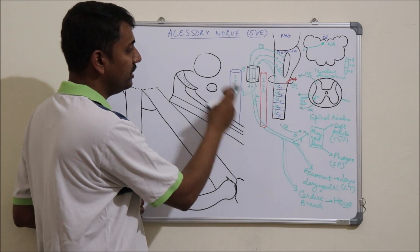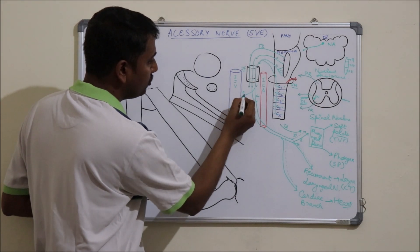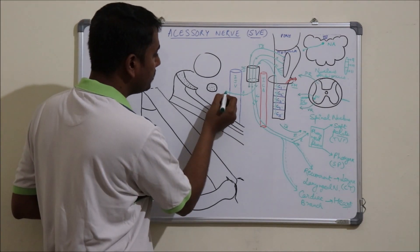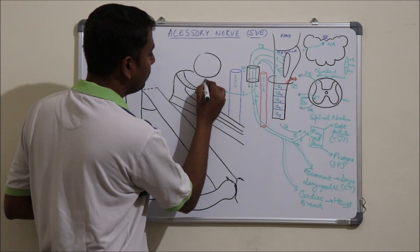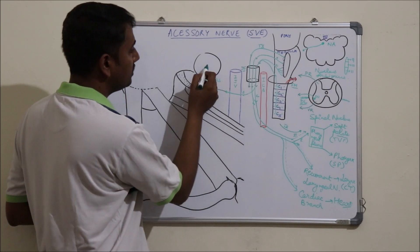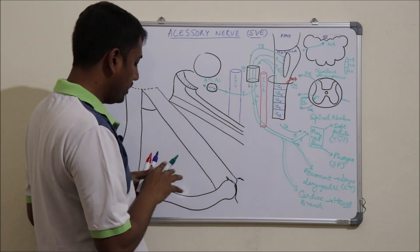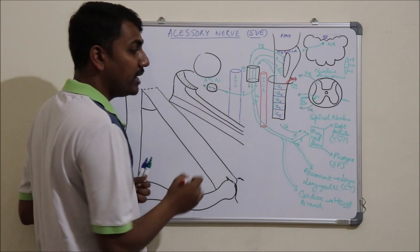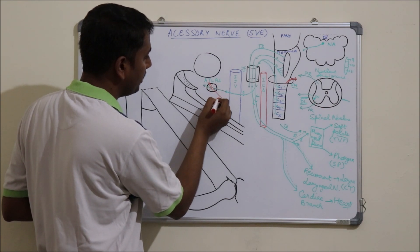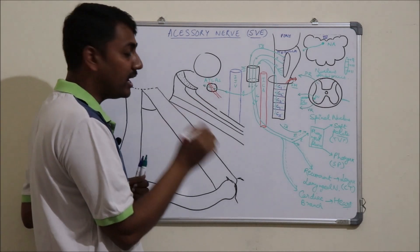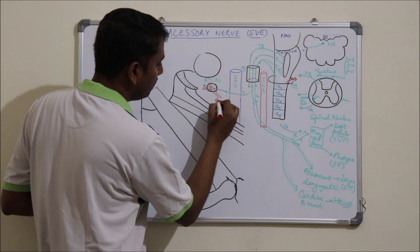The spinal part of the accessory nerve passes laterally, crosses the internal jugular vein superficially, then crosses the tip of the transverse process of the atlas vertebra. At this point the nerve is crossed superficially by the occipital artery and is accompanied by the upper sternomastoid branch of the occipital artery.